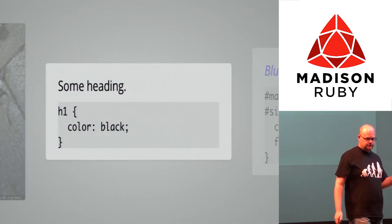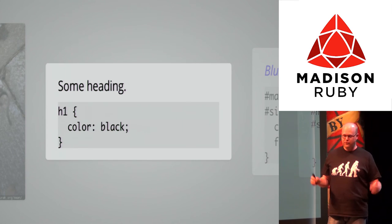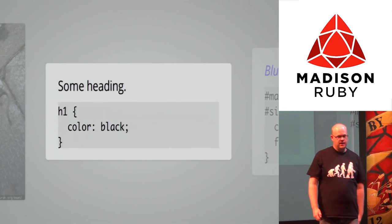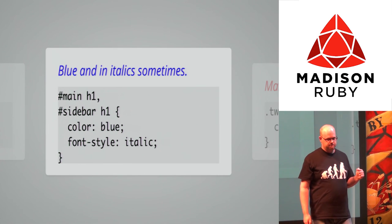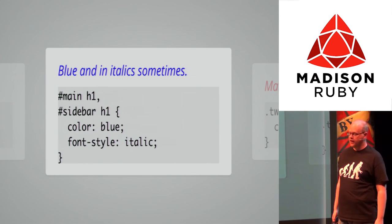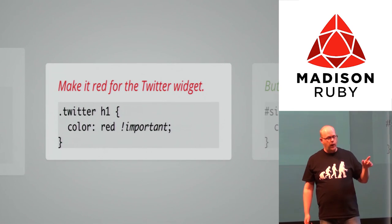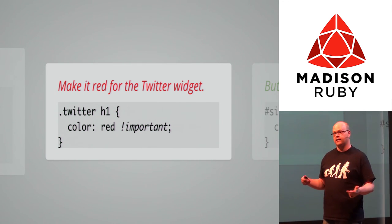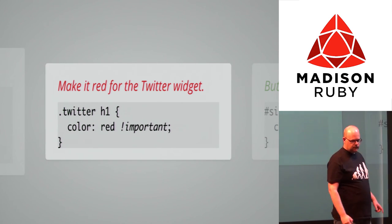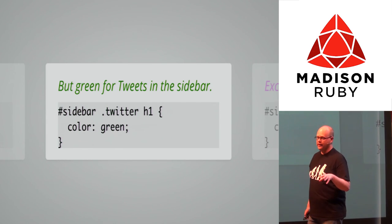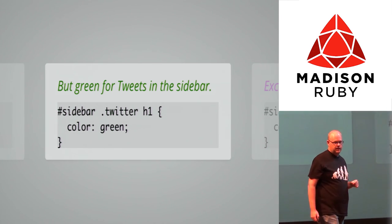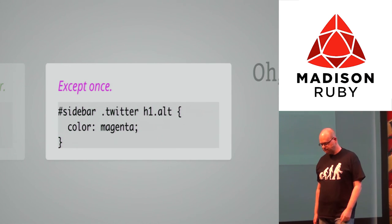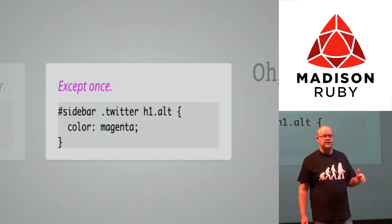What went wrong? You had this heading you wanted to be black — that's all fun and games. But you want it blue and italic sometimes when it's in some container with ID main or sidebar. Then for the Twitter widget you want it red, so you add an !important to make sure it actually turns red because of specificity. Then for tweets in the sidebar it needs to be green, so you do this and it works — except once. You just add a class name to the H1 and that worked. This is how you create code looking like dead rats next to puddles of cat vomit.